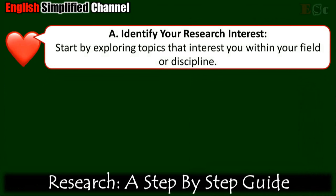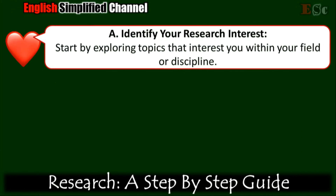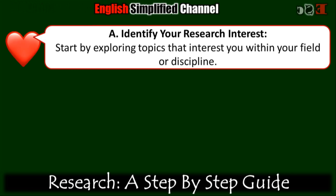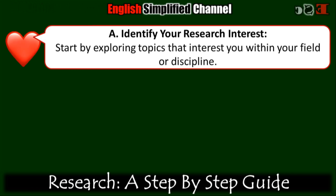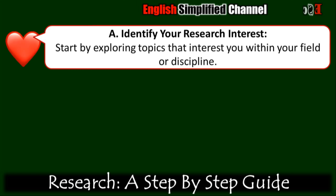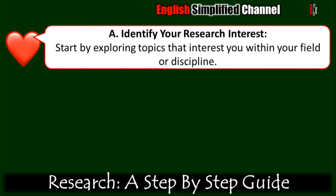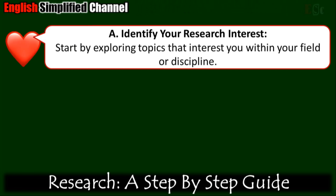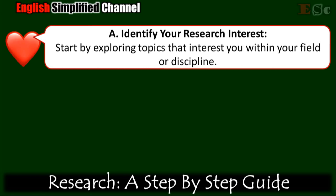Step a: Identify your research interest. Start by exploring topics that interest you within your field or discipline. Consider recent developments, controversies, gaps in knowledge, or areas where further research is needed. Reflect on your own interests, expertise, and career goals to narrow down potential research areas.